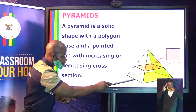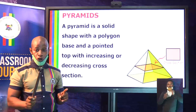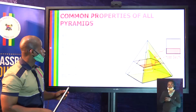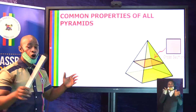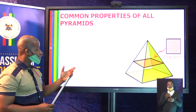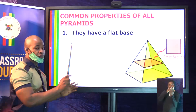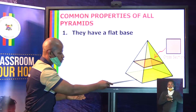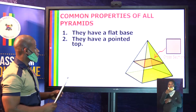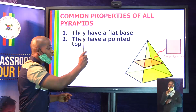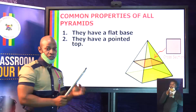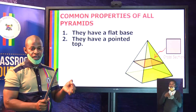Mind you, the base has to be a polygon — it shouldn't be a circle. Now let's look at the general properties of all pyramids. They have a flat base, and this shape must be a polygon. They all have a pointed top — it must be sharp and must be a vertex.